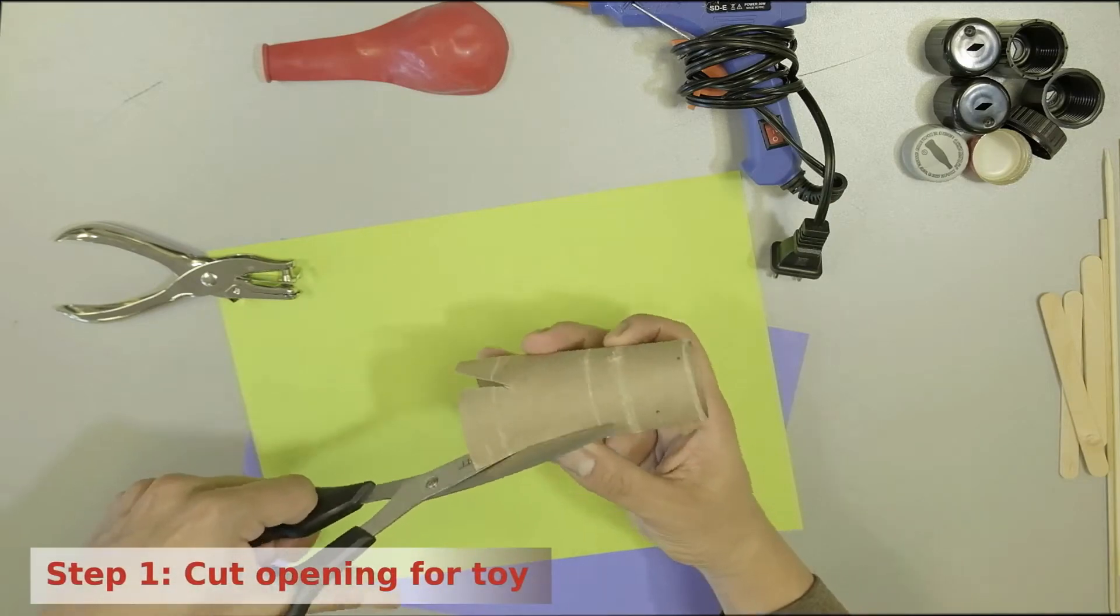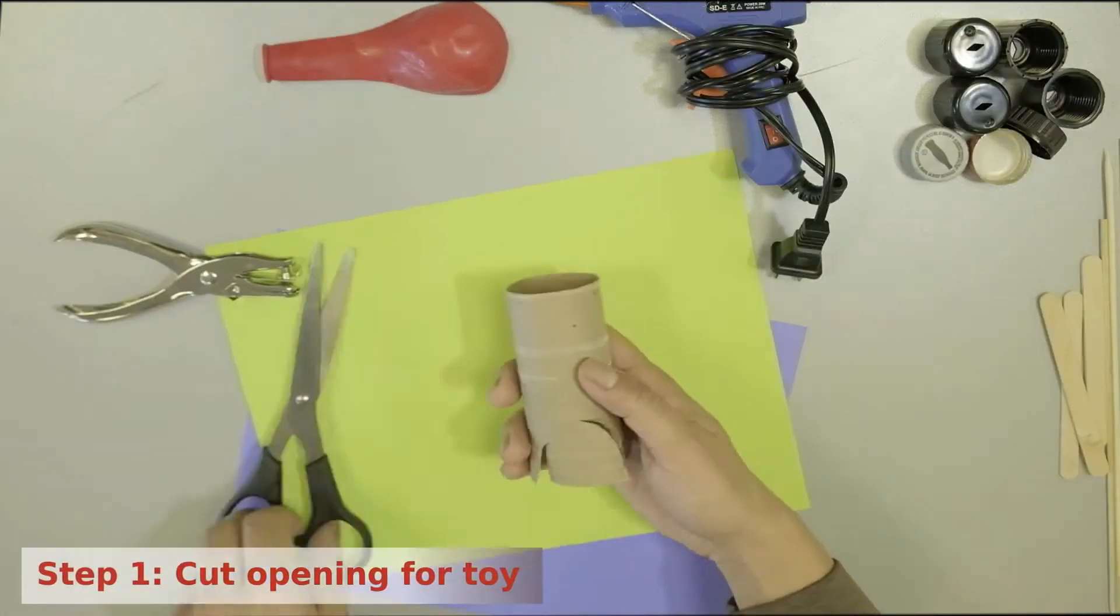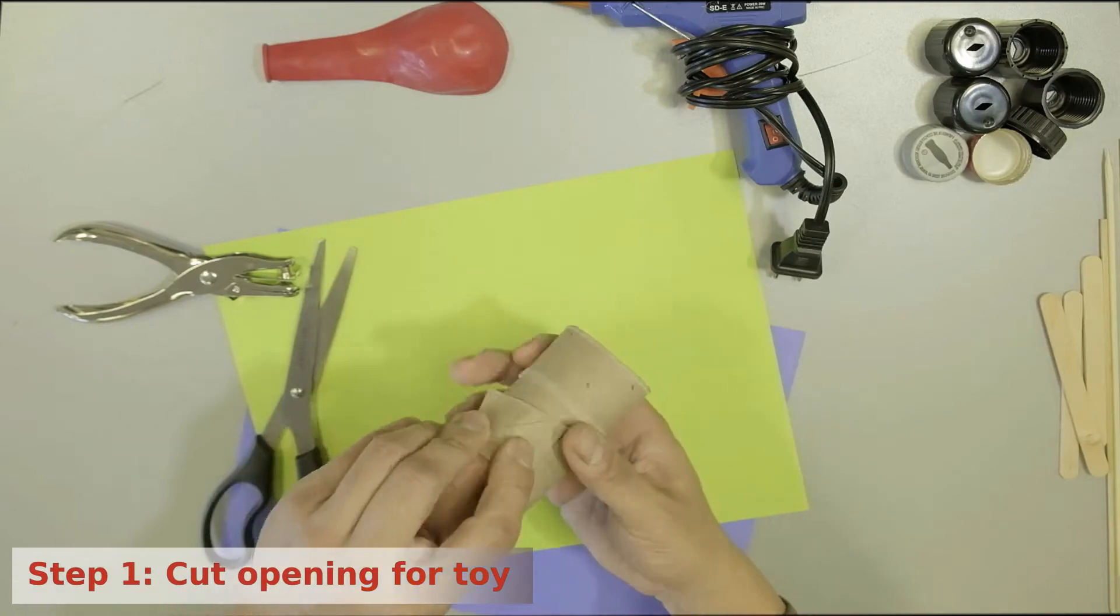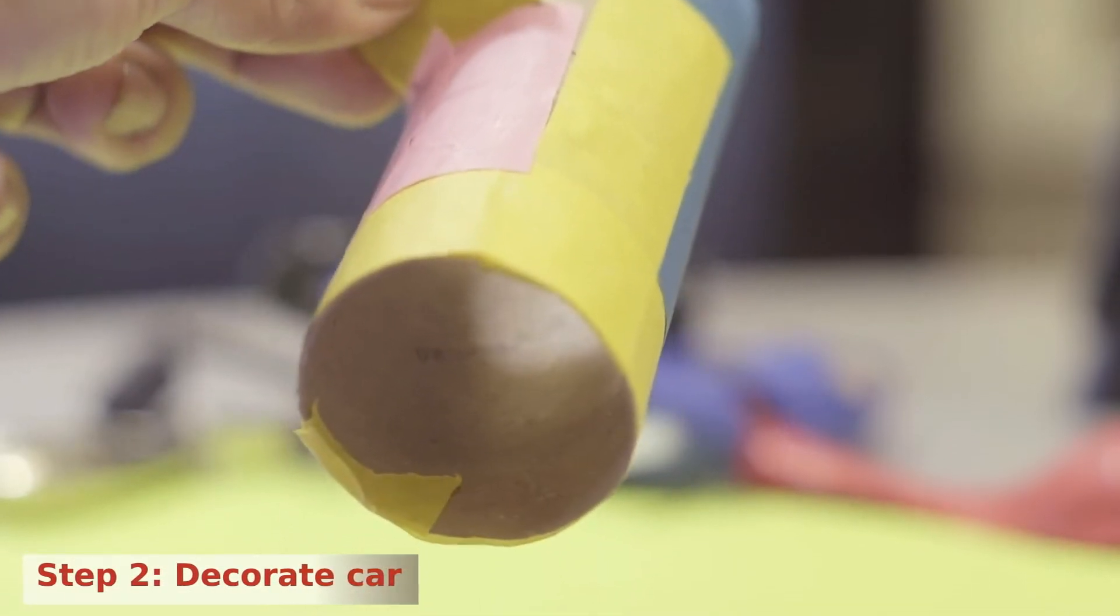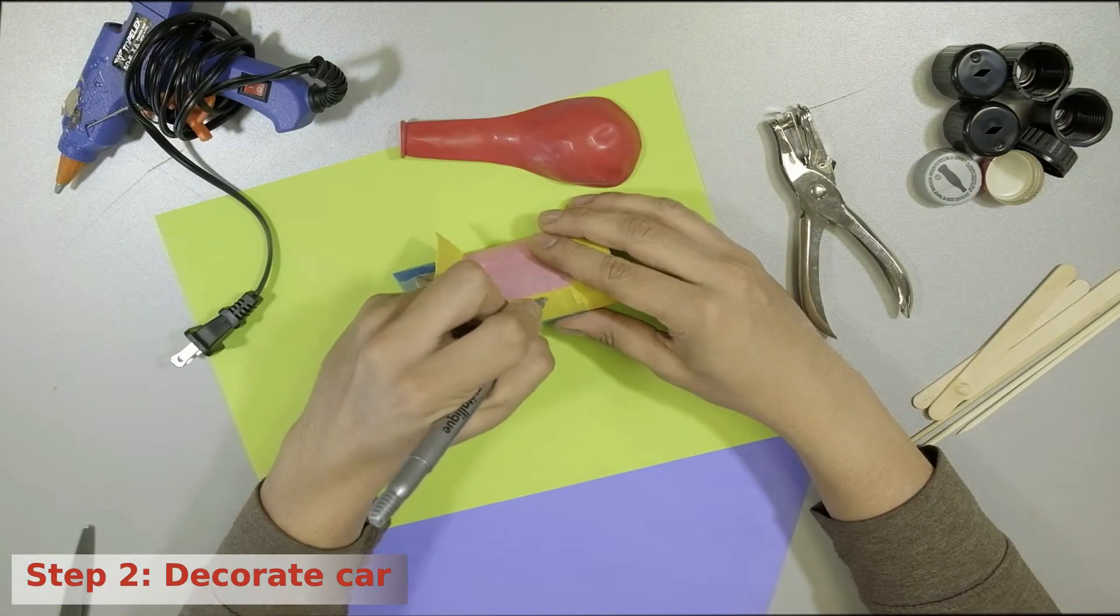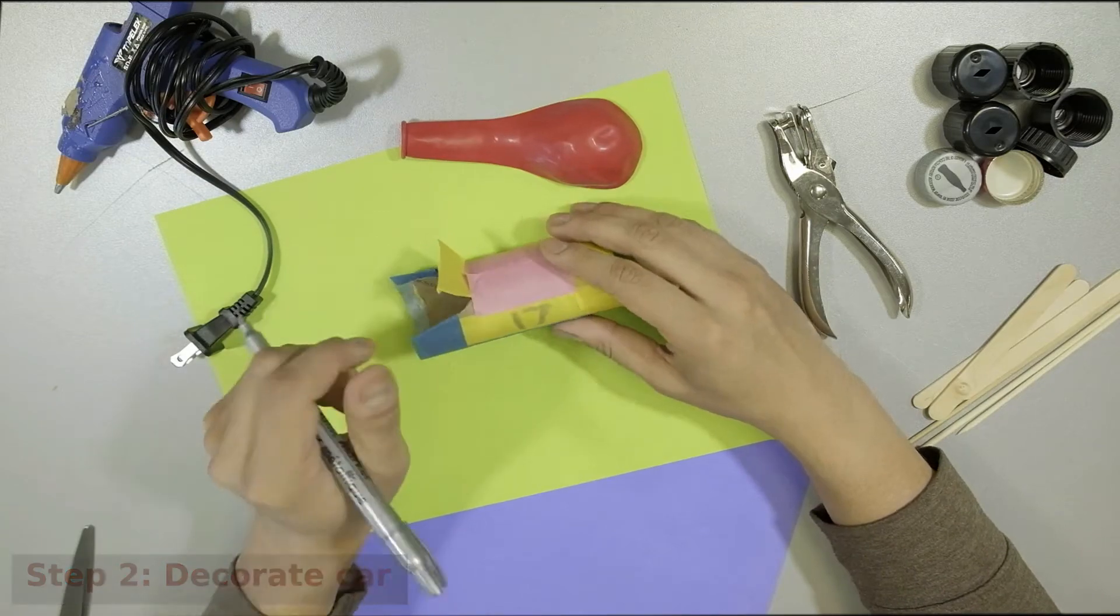Begin by cutting a u-shape into the cardboard tube to make an opening for toys to sit in the car. Fold the u up and cut it again to make it smaller. Then decorate your tube using colored tape, paint, or colored markers. You can even add a number to the side as well. Take your time and have fun with this step.